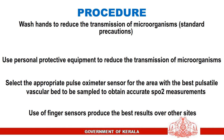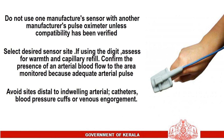Procedure: wash hands to reduce the transmission of microorganisms as standard precautions. Use personal protective equipment to reduce the transmission of microorganisms. Select the appropriate pulse oximeter sensor for the area with the best pulsatile vascular bed to obtain accurate SpO2 measurements — use of finger sensors produces the best results. Do not use one manufacturer's sensor with another manufacturer's pulse oximeter unless compatibility has been verified.